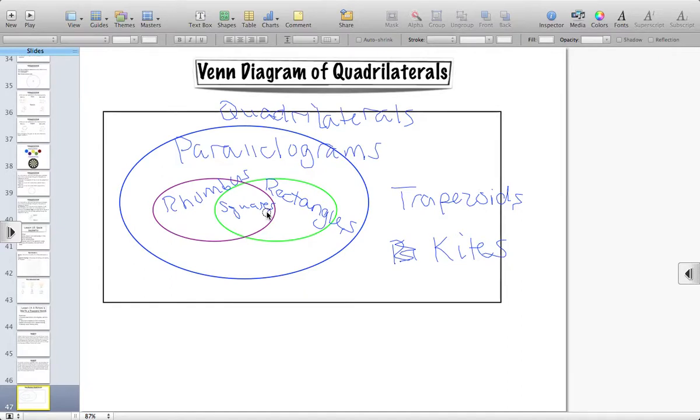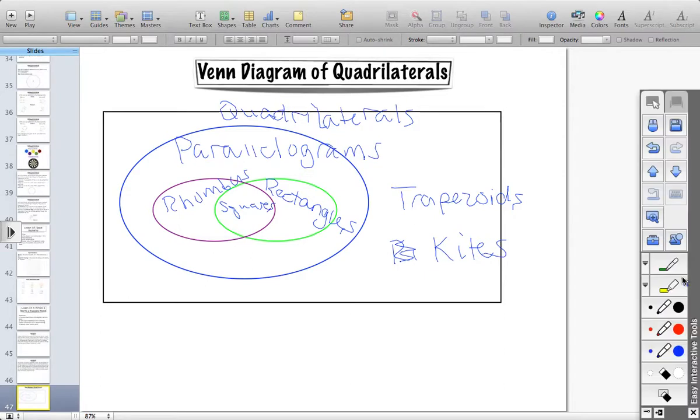And then the most specific parallelogram category I have is a square. All right. A square has the characteristics of a rhombus. All four sides are congruent. Has the characteristic of a rectangle, where all four angles are congruent. And opposite sides are parallel. And it's four sides. So, a square is a rhombus, it's a rectangle, it's a parallelogram, and it's a quadrilateral. So, the Venn diagram helps me show all these categories in order of our quadrilaterals. So, knowing those specific categories, when I'm reading word problems, it can help me visualize what's happening a little bit more easily.